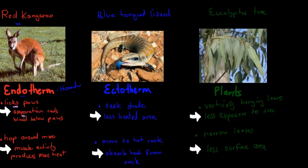One of the things the red kangaroo can do is lick its paws. When it licks its paws, evaporation occurs from the saliva, which cools the blood below its paws and thereby cools its whole body. It does this when it's too hot outside — licking its paws brings its temperature back down to normal. It can also hop around more; when it does, its muscles become more active and produce more heat, which increases the body temperature. So if it's too cold, it will hop around to produce more heat.